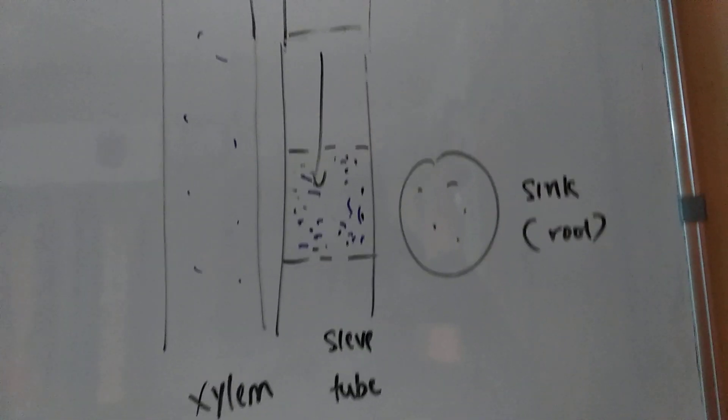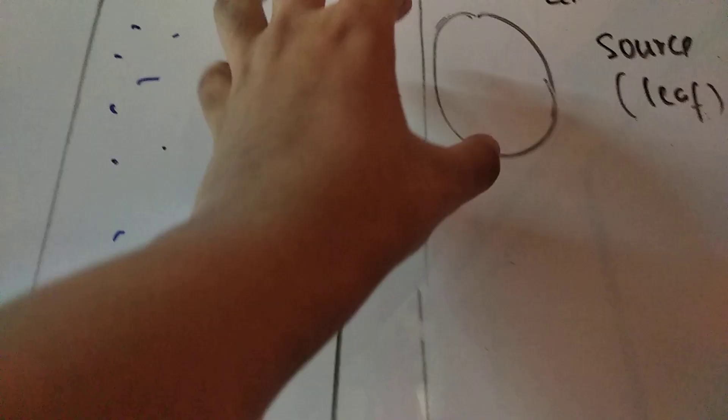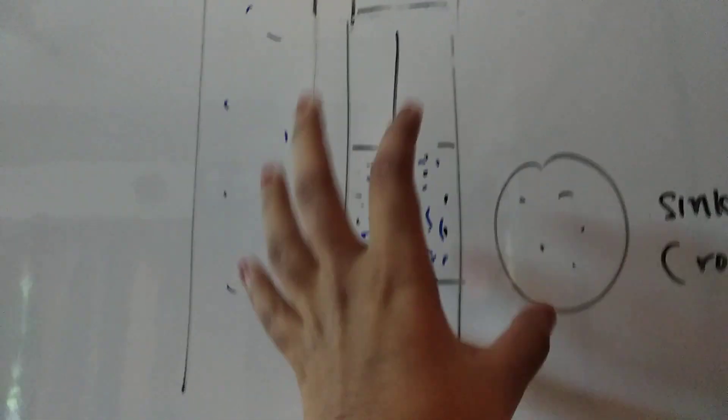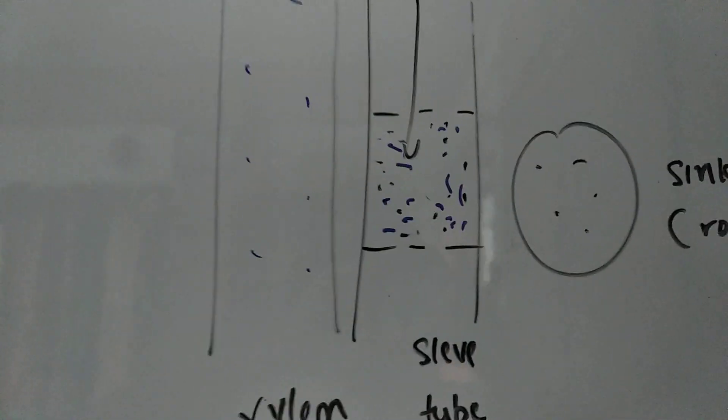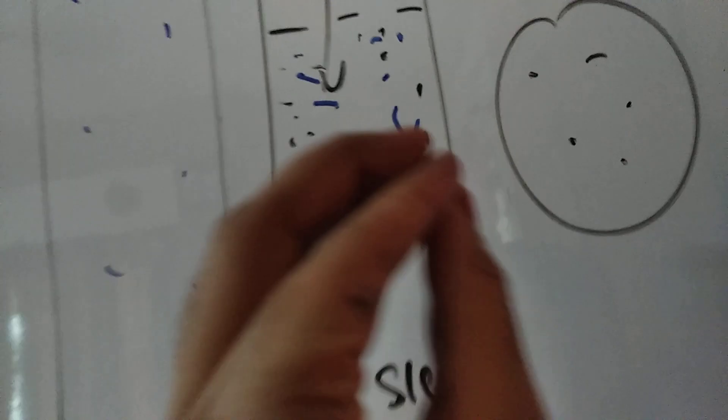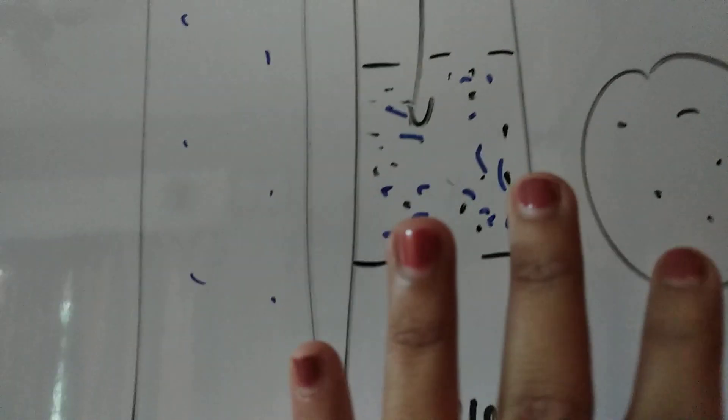So this region is now back to normal. All of the phloem solutes and everything has moved to this region. Over here, since there is so much water, it's actually a dilute solution. It's even more dilute than xylem at times.